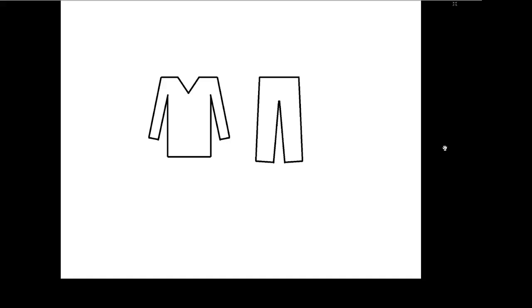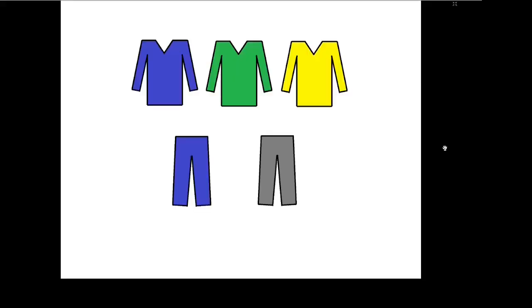Let us consider a situation where I want to choose a shirt and pants. I have three shirts of different colors — blue, green, and yellow — and two pants, one blue and the other gray. If we only consider the shirts alone, what is the probability of me wearing the blue shirt? If no further information is provided, all three shirts have the same chance of being chosen. Therefore, the blue shirt is one choice out of three possible choices, and the probability is one divided by three.